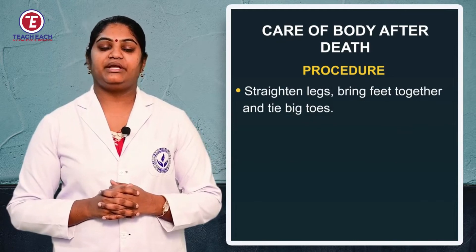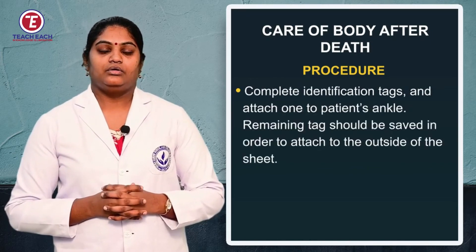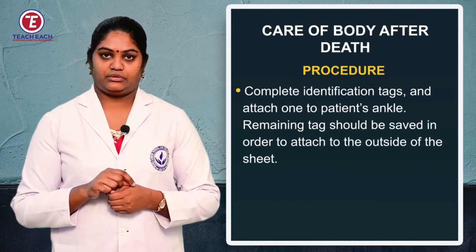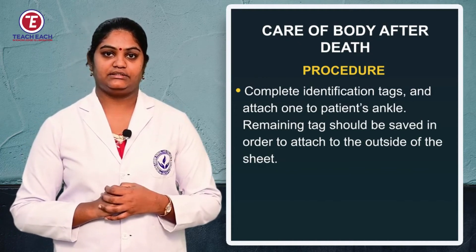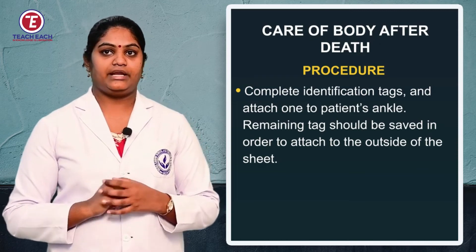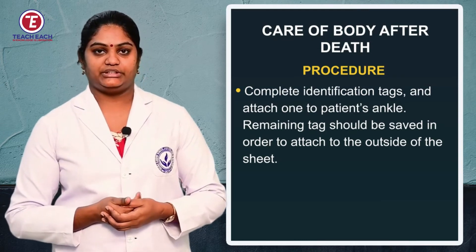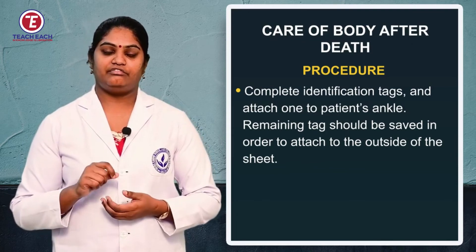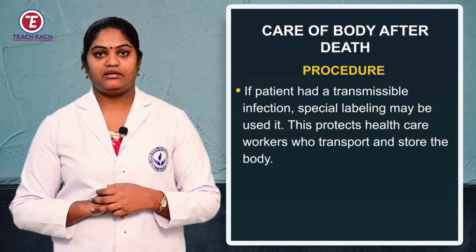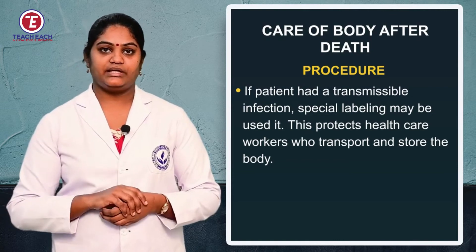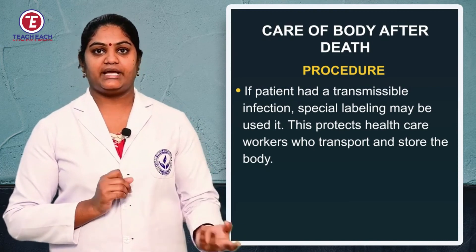Keep the patient's legs straight, place the feet together, and tie the toes together. Then place identification tags on the toes, ankles, and breast area — these tags help identify patient details. Put a gown on the patient and attach another identification tag over the bed sheet. If the patient had any infectious disease, note this on the tag or bed sheet to alert health workers during transfer.